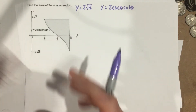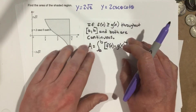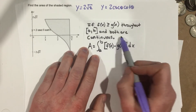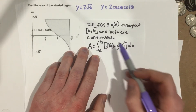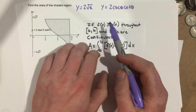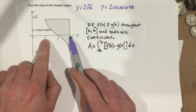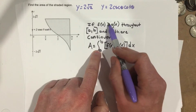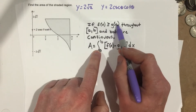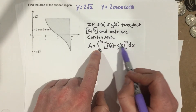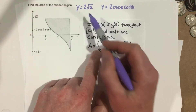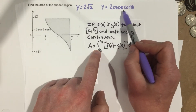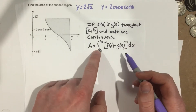We know, using this formula, that we can find the area between two curves as long as they're both continuous throughout the interval from a to b. We take the top equation, the one that's greater than or equal to the other, and subtract the other equation from it. In this case, 2 root 2 is the top equation and 2 cosecant theta cotangent theta is the bottom equation.